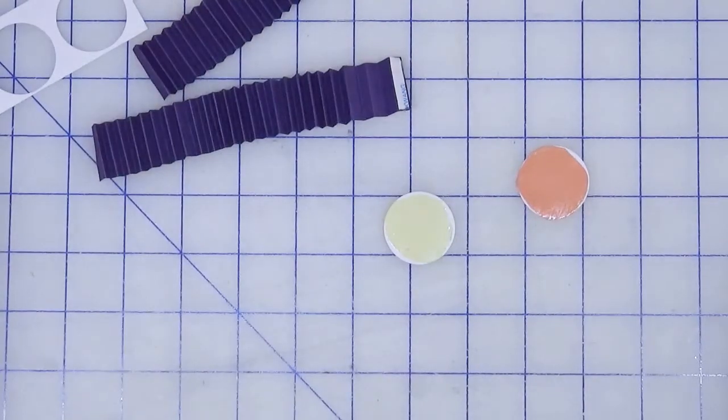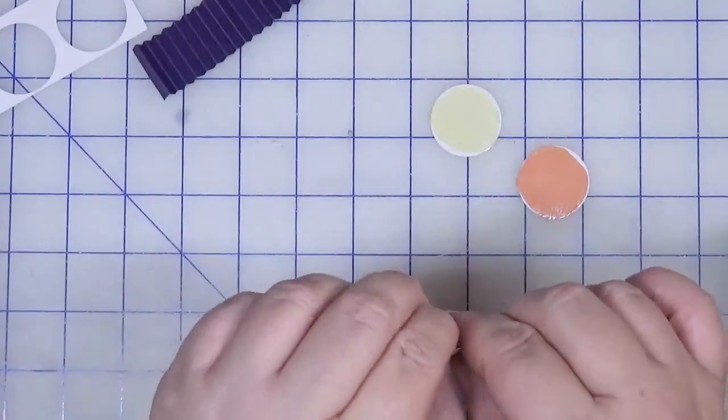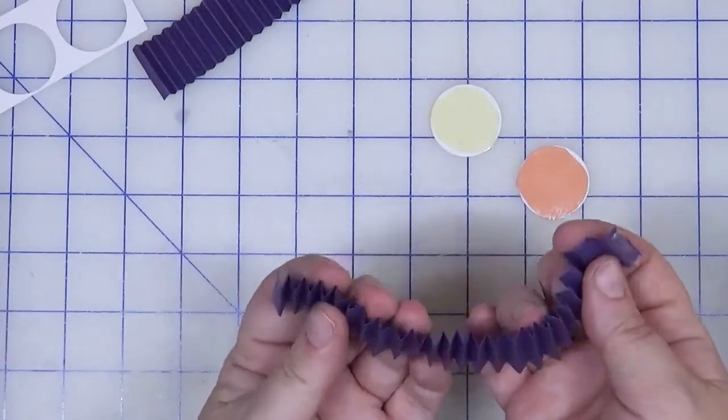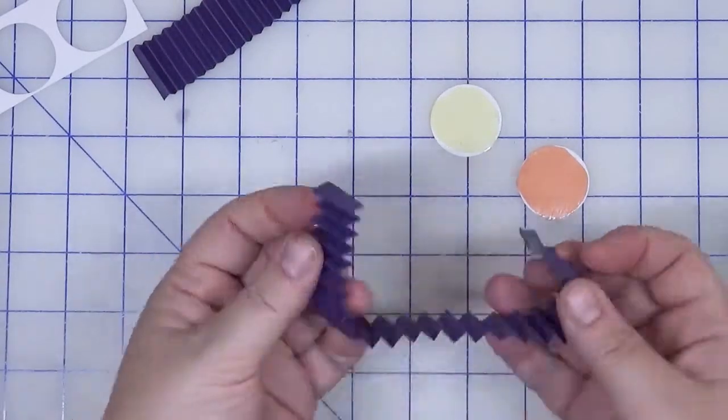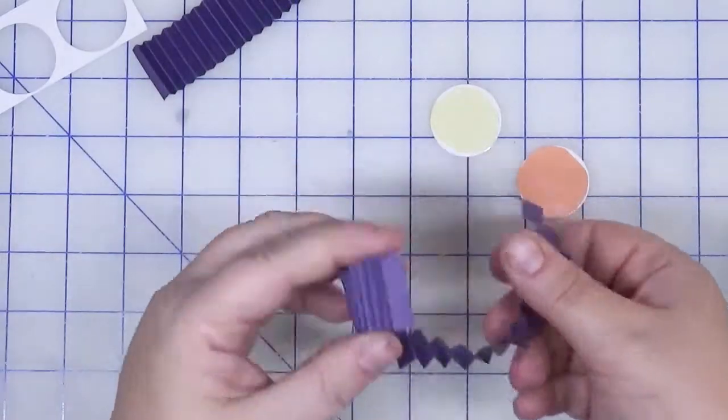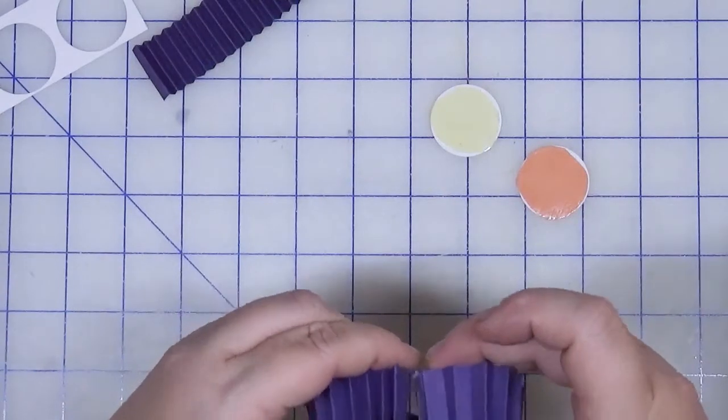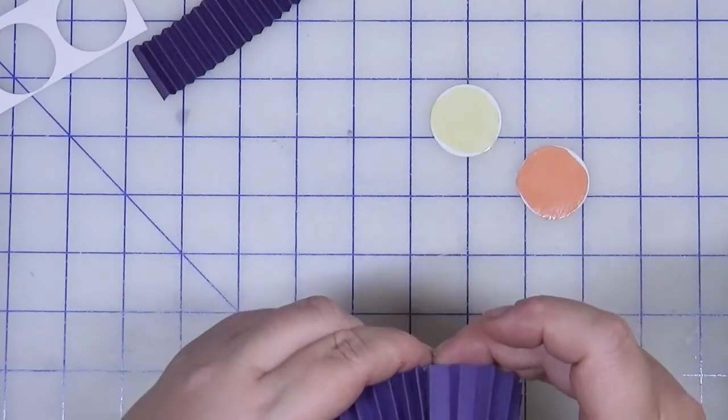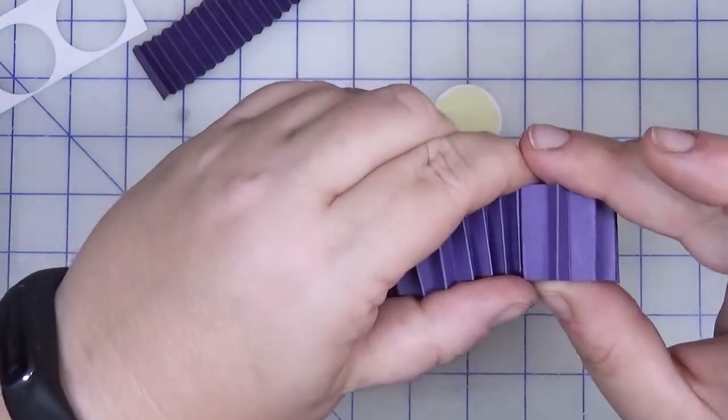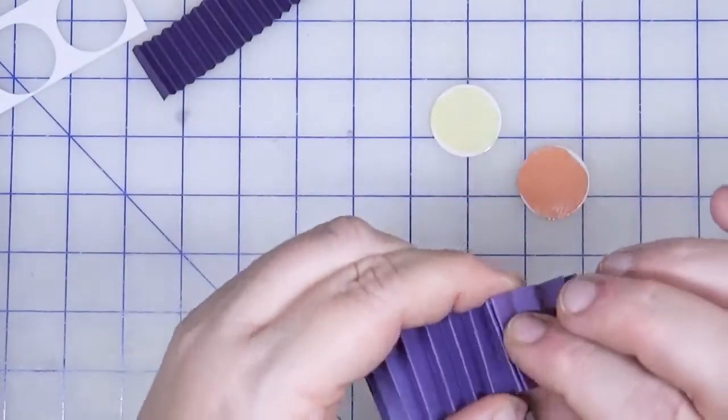This is super sticky stuff you guys. Take the Scor-Pal, take the release paper off the Scor-Pal tape, and we are going to connect these. So form a circle, don't twist it, just form a circle and align these two edges at the fold. Align at the fold, align at the fold, and you can see that. Give that a good press.